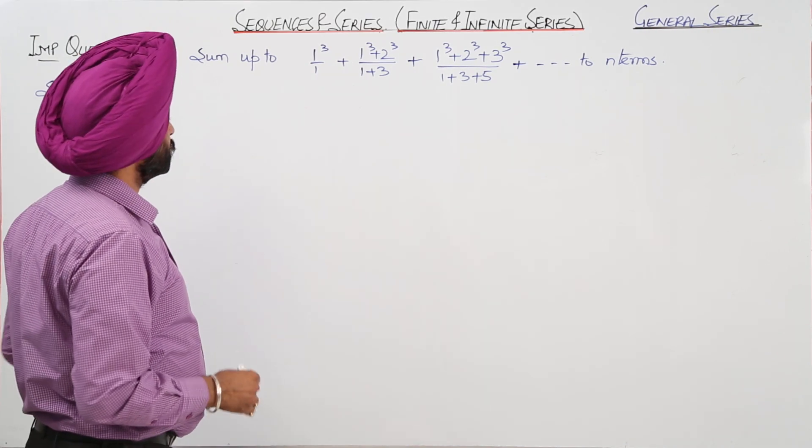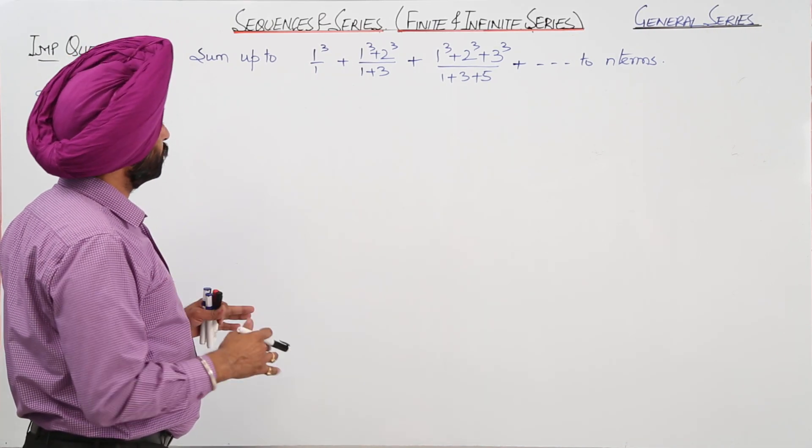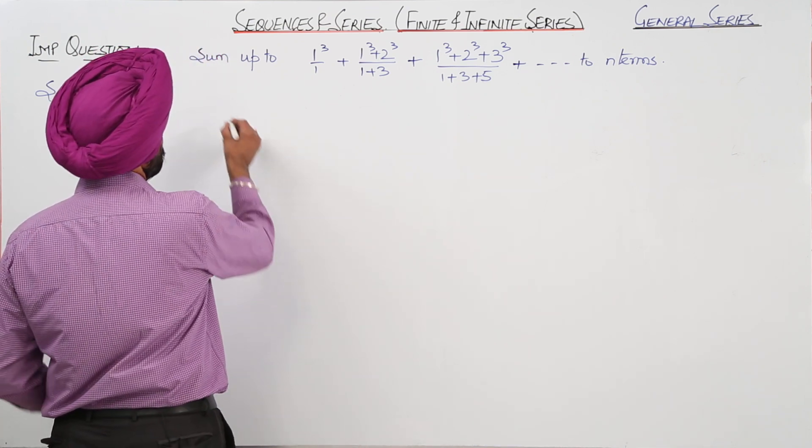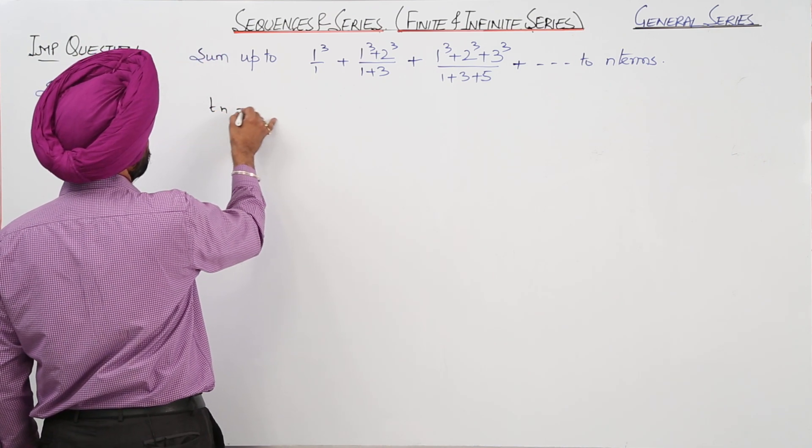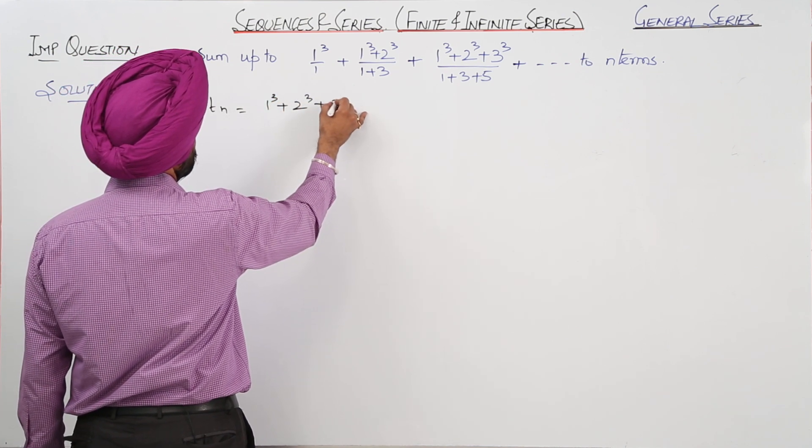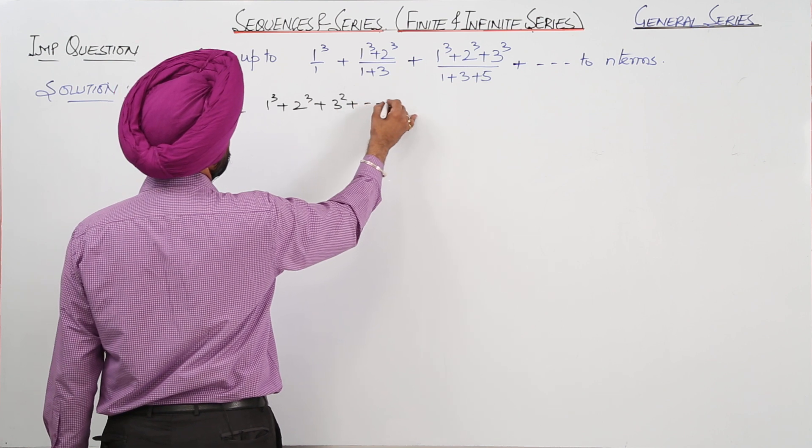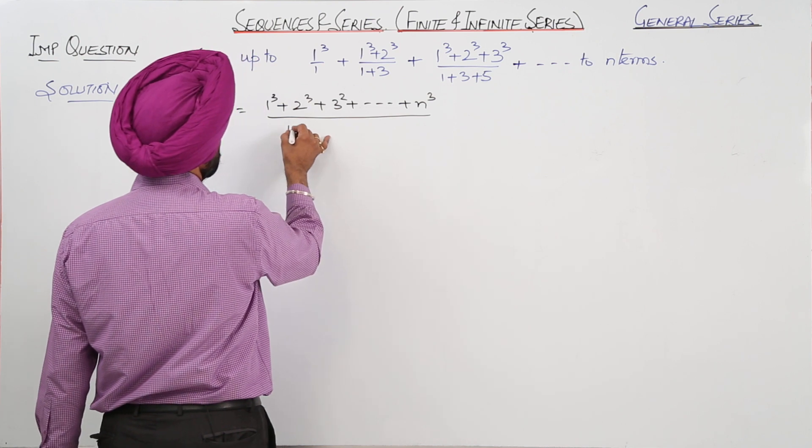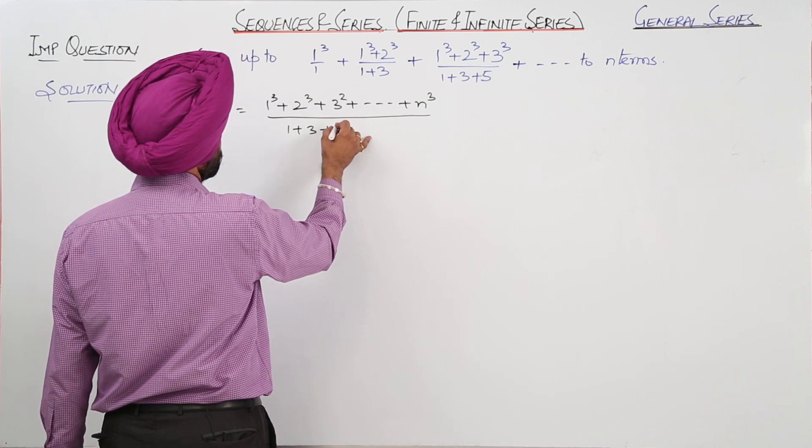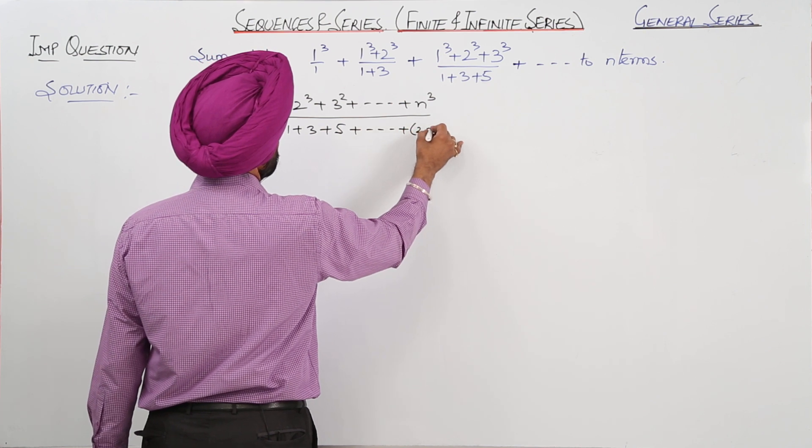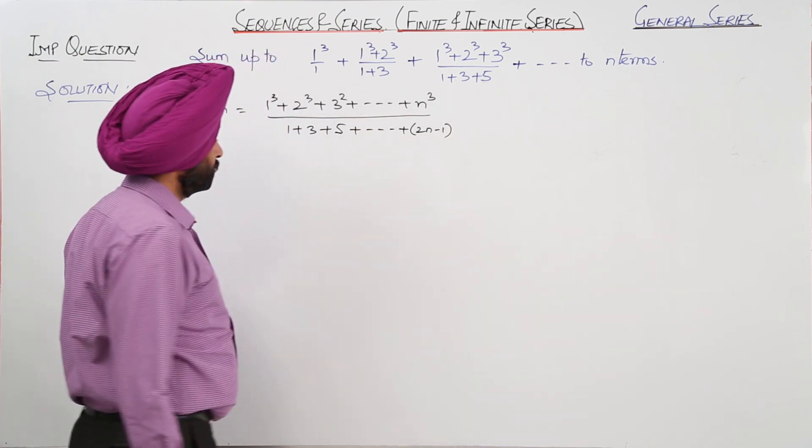Now in this question we have to find the sum up to n terms for the given series. Here Tn becomes 1³ + 2³ + 3³ + ... + n³ upon 1 + 3 + 5 + ... + 2n - 1.